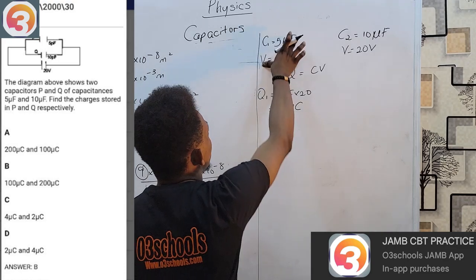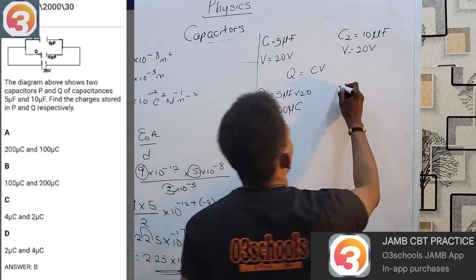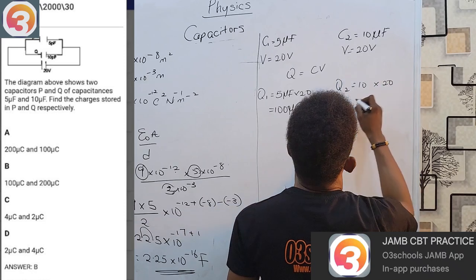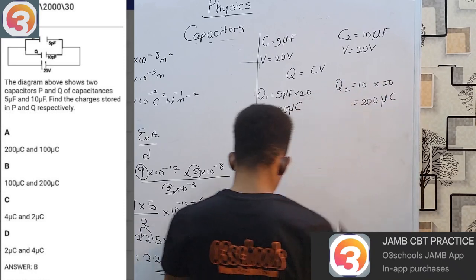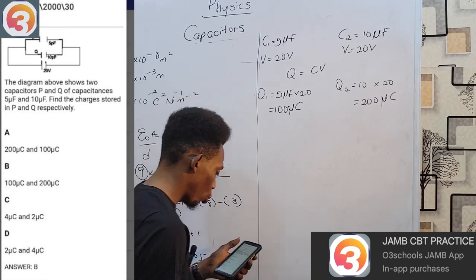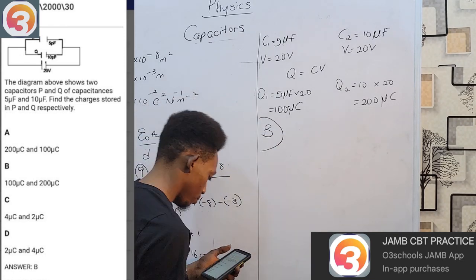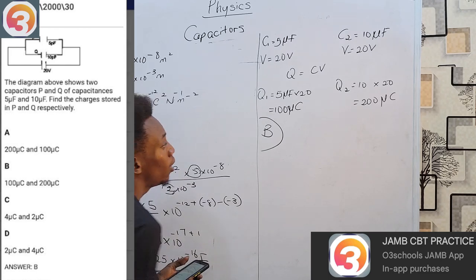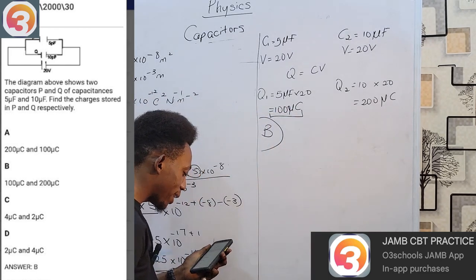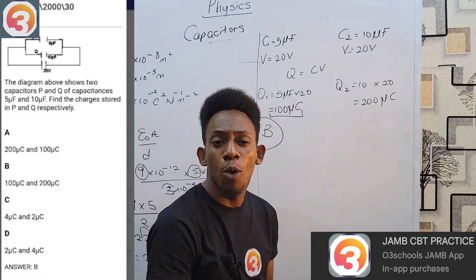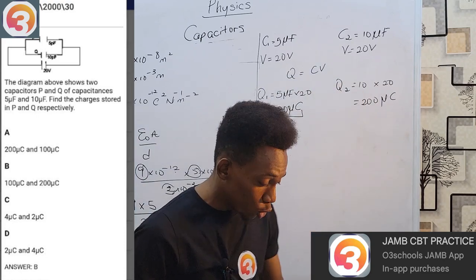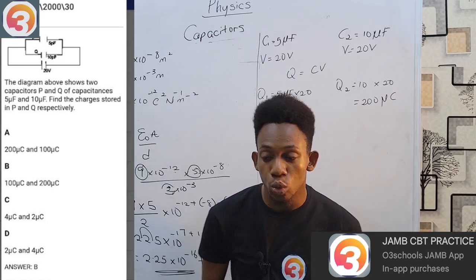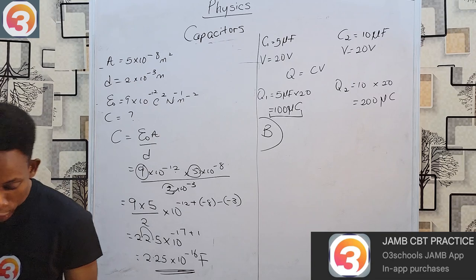Charge Q₁ = C₁ × V = 5 microfarad × 20 = 100 microcoulombs. Charge Q₂ = C₂ × V = 10 microfarad × 20 = 200 microcoulombs. The answer is option B: 100 and 200 microcoulombs respectively. As a shortcut: once you find the first charge is 100, just look for the option with 100 as the first value — only one option will match, and the second value must follow.